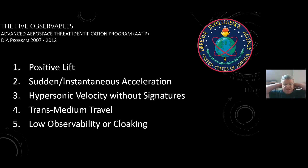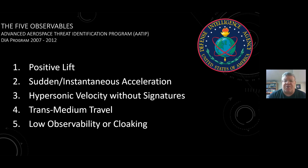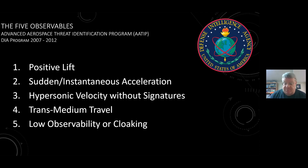We learned from Elizondo and the ATIP program that they developed the five observables. The first one is positive lift, the second is sudden or instantaneous acceleration. As a physicist, I get a little nervous when I hear the word instantaneous, because that's not measurable — very high rates of acceleration is what they're noting, and at times immeasurably high. Third is hypersonic velocity without signature, fourth is transmedium travel, and fifth is low observability or cloaking.